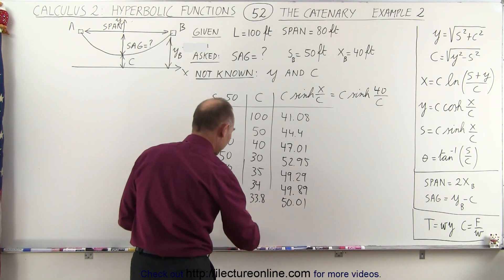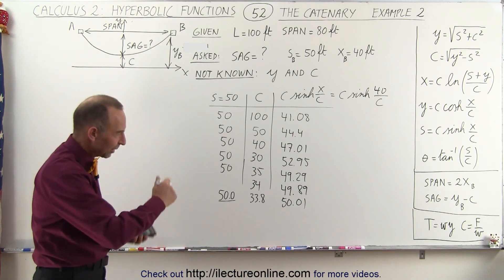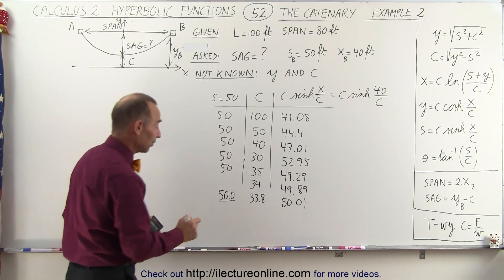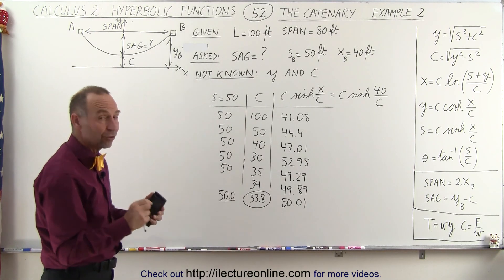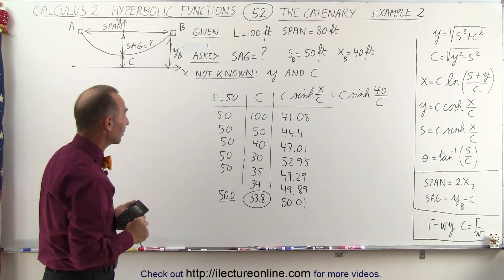And we get 50.01. And so that is getting really close. For all purposes that's close enough. We could actually get a little bit closer if we wanted to but I'm going to say that this is a good value for c that gives us all the right results for our particular cable.